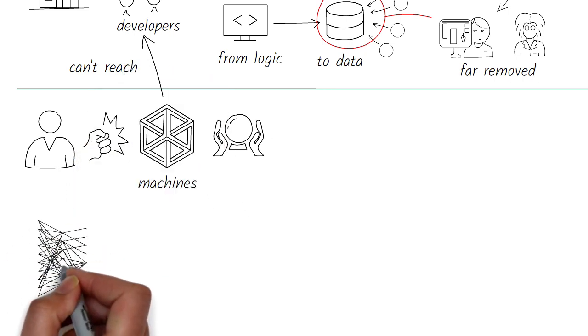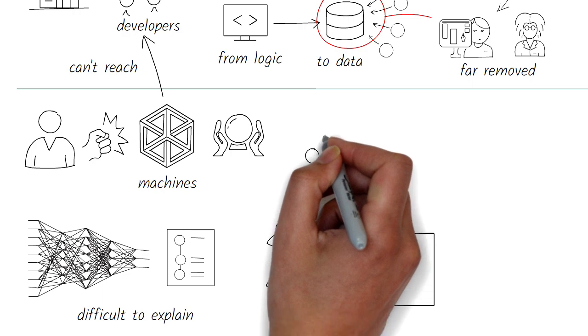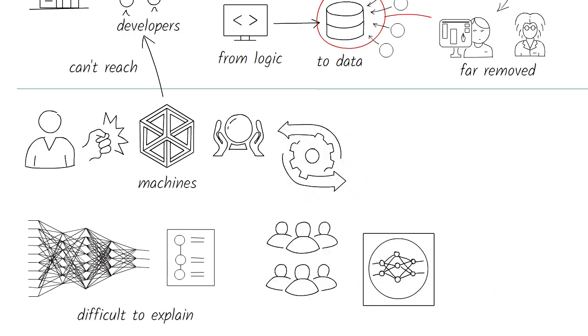And even if we do reach them, they might have very little clue on why the machine made the decision it did, because often AI is difficult to explain. This is a dangerous world of algorithm driven automation.